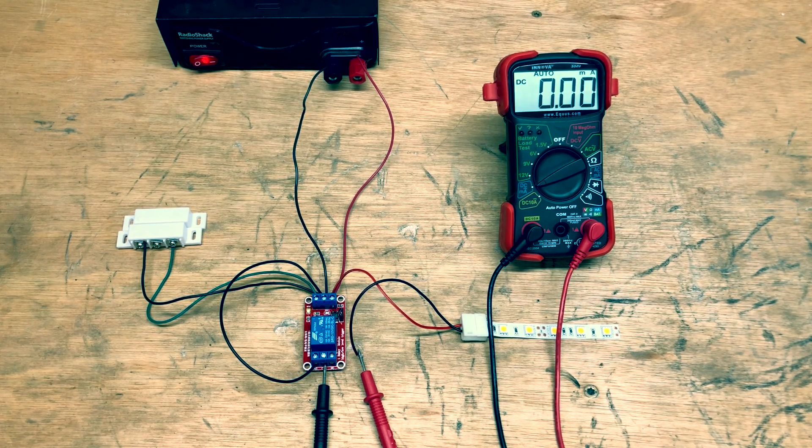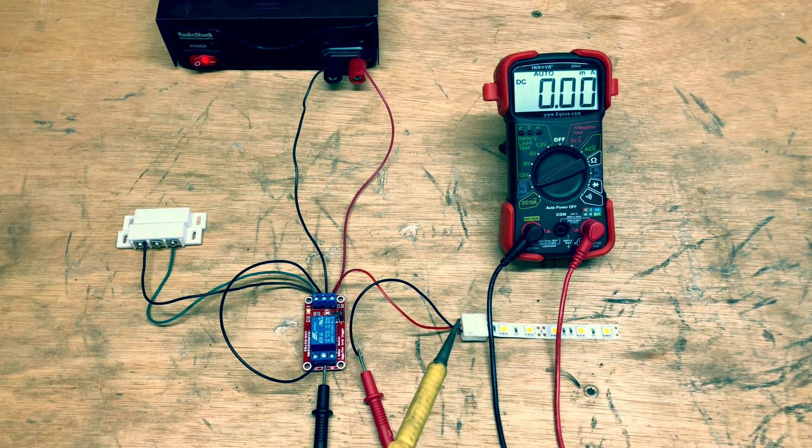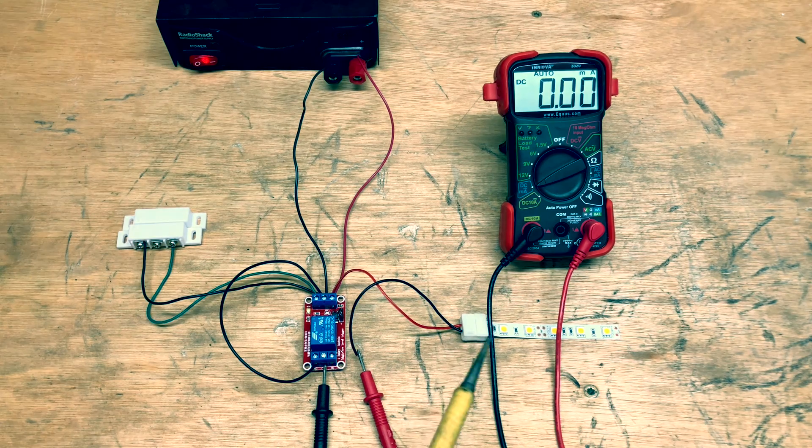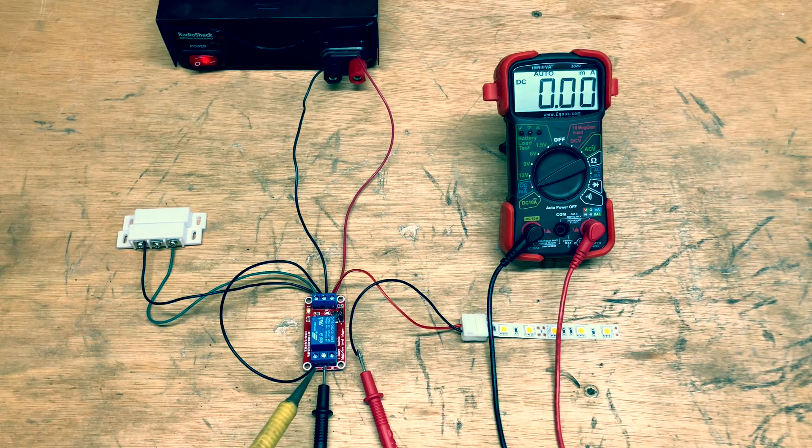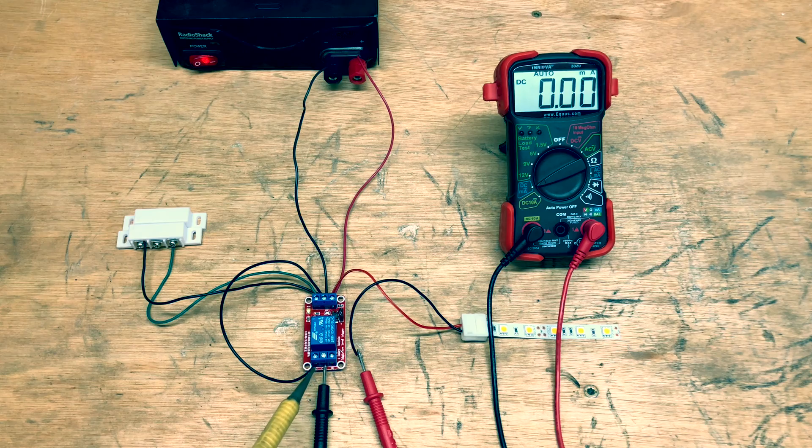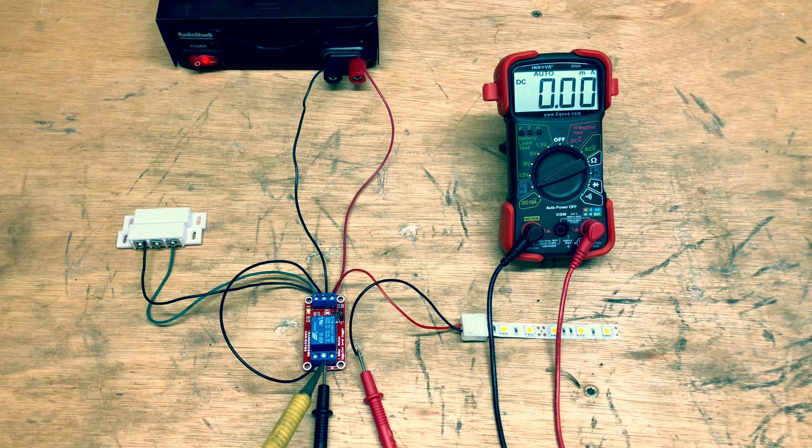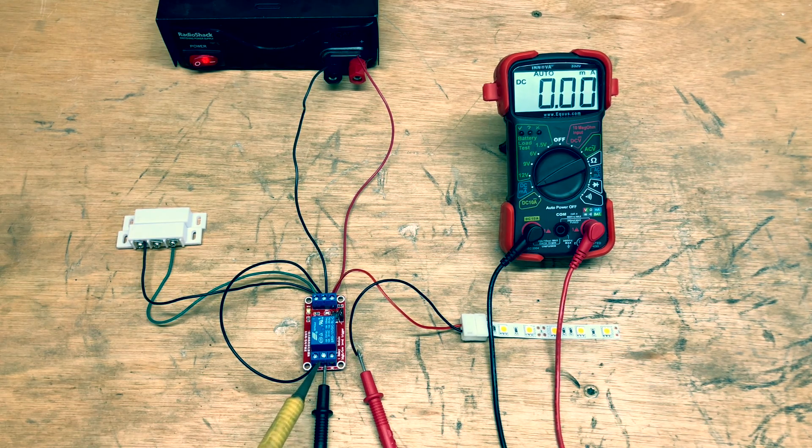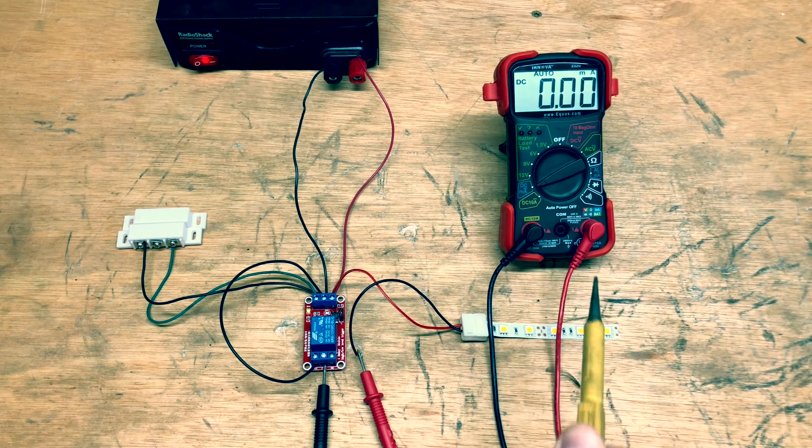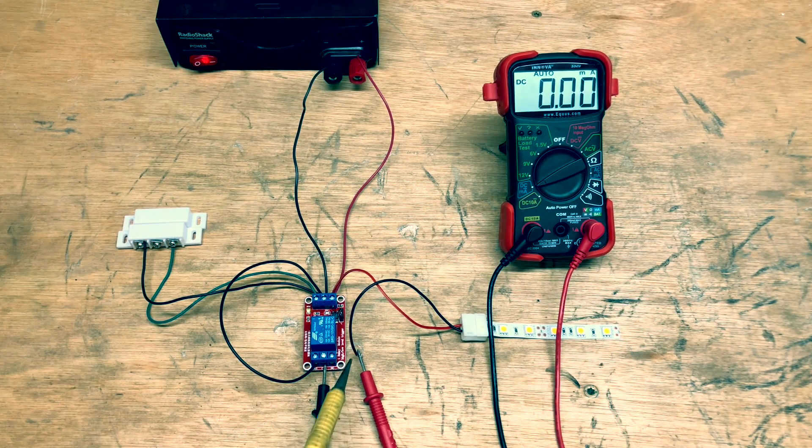Now we've got the multimeter hooked up and we intercepted the wire going to the LEDs to measure the power there. So we undid this black wire from the COM coming out of the relay, stuck our multimeter probe in there, runs through the meter, back out the red, and then hooked up that black wire to the red.